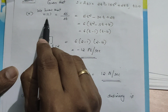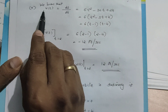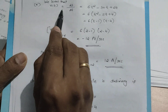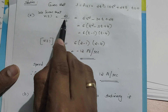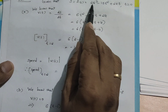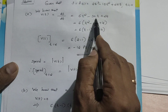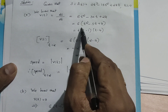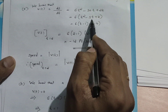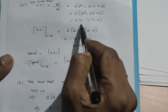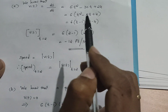First question: what is the velocity at time t equal to 2? For that, we consider v of t. By the definition, v of t is the rate of change of position, that means ds/dt. Just differentiate this polynomial function: that is 6t² - 30t + 24, which equals, taking 6 outside, 6(t² - 5t + 4). Factorizing this polynomial, we get 6(t - 1)(t - 4).